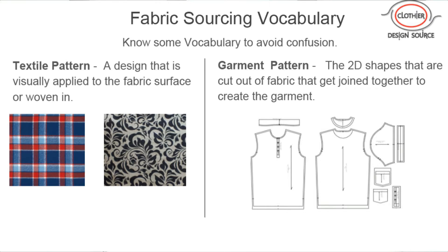There's confusion around the word 'pattern' in the industry. If I ask you if you have a pattern, what I'm talking about is the picture on the right side — a garment pattern. Lots of people are going to ask you about patterns and they're not talking about the picture on the left side, which is like a print or a textile pattern. They're talking about the shapes of the garment. A garment pattern is the shapes of the panels that need to be cut out to create your garment — this looks like a Henley pattern with a pocket.